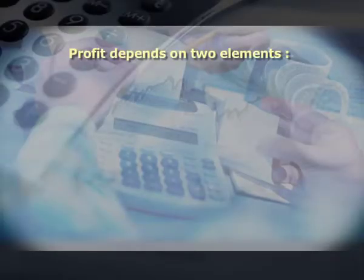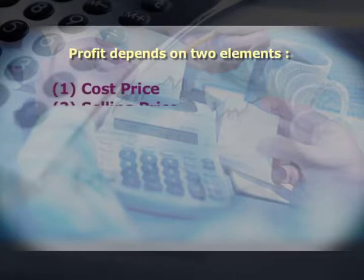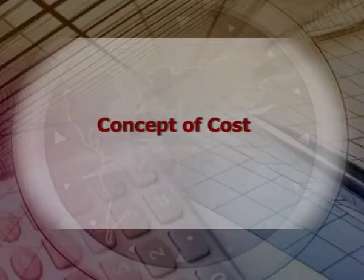Corporate returns means profit in most cases. Profit depends on two elements: first is cost price and second is selling price. Cost price simply means the price incurred for making the product, carrying the product, and promoting the product — all the price until the product is sold but without profit. If it is cost with profit, it becomes selling price.